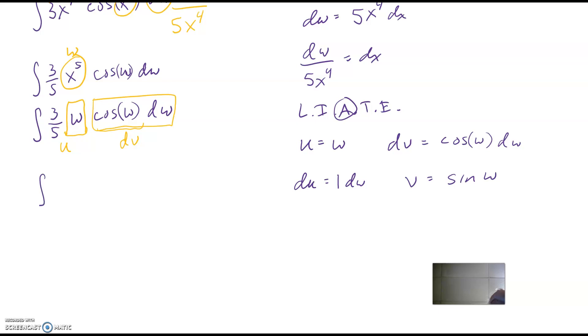Okay, and then the formula is u, oops, hold on there. It's uv minus integral vdu. So u times v, right there, it's w times sine w minus, and then integral vdu. So that's sine w times one w, so that's just sine times dw. Oops, hold on, I forgot. It's sine of w times dw.